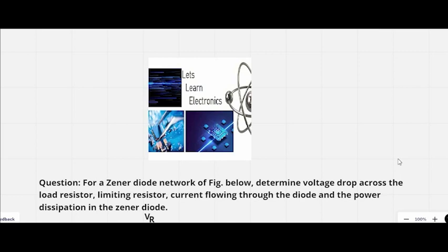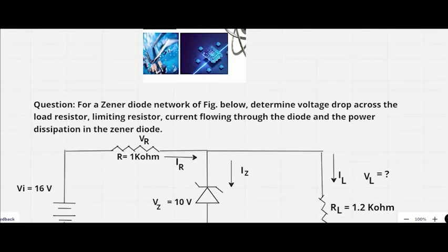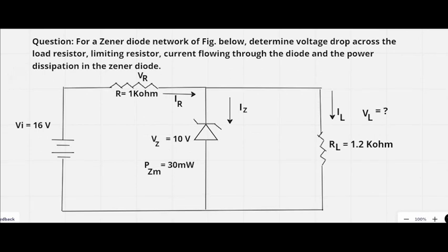Let's start with this first basic numerical. This is the circuit diagram for a voltage regulator circuit. Input voltage supply Vi is 16 volts. The limiting resistor has the value of 1 kilo-ohm. We have to determine the voltage drop across it. The current IR is flowing through it, and the Zener diode has the breakdown voltage of 10 volts.